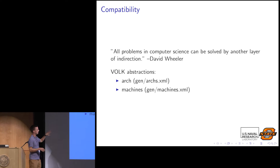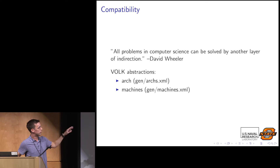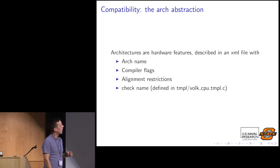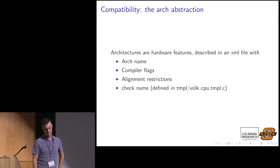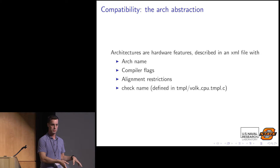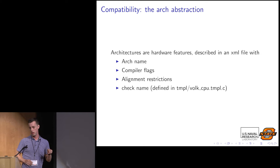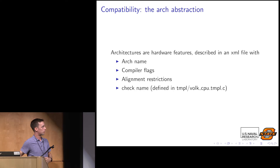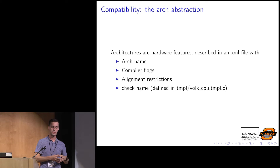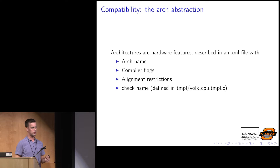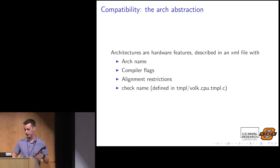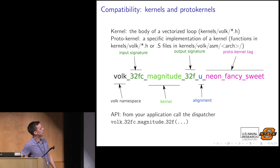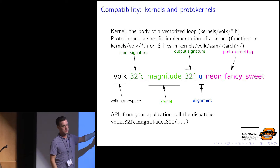VOLK has a pretty clear definition of its abstractions — there are two: the architecture and the machine. The architecture defines a very specific SIMD implementation: AVX, Neon, SSE — those are all different architectures, and they usually have some compiler flags and alignment restrictions that go along with them. There's a file in VOLK that defines all of these. Machines are collections of architectures — for example, if you bought an i7 4800-series CPU, it would have AVX, AVX2, SSE and all its variants, and that would be a machine.